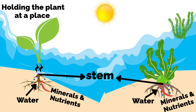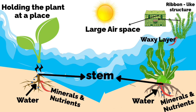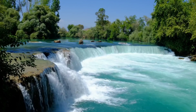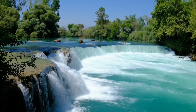Leaves have large air spaces and a waxy layer at their bottom, which helps them float on the surface of the water. Leaves are often divided into a ribbon-like structure, which allows water to flow through them so that fast-flowing water does not damage the leaves.